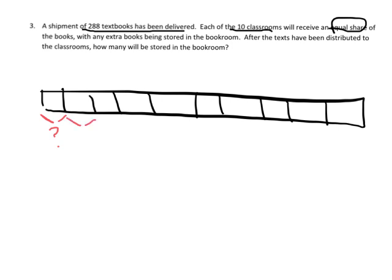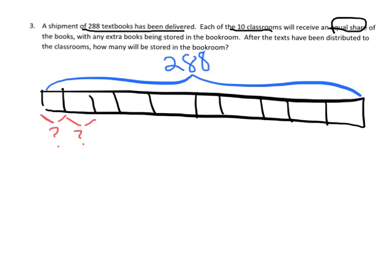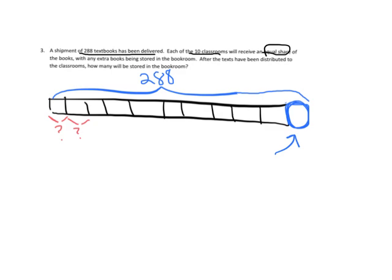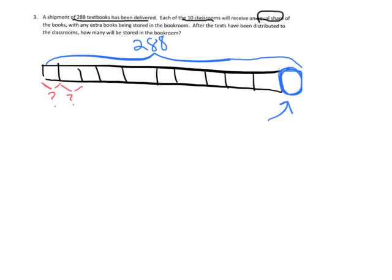So that means what we're going to do is we know that we've got 10 classrooms: 1, 2, 3, 4, 5, 6, 7, 8, 9, 10. And we know that an equal number of books are going to be delivered to each of these classrooms and we have 288 books altogether. We're supposed to figure out what are the leftovers. So really the 288 is actually going to go beyond our 10 classrooms and we want to know how many books are going to go in the 10 classrooms plus how many are going to go in the book room.